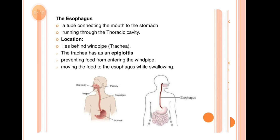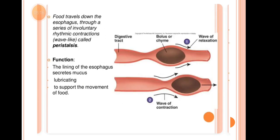As you chew food, saliva mixes with it; then you swallow and the food moves forward through the esophagus. Food travels through the esophagus through a series of involuntary rhythmic, wave-like contractions called peristalsis — this is the term for that particular movement function.